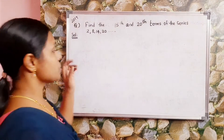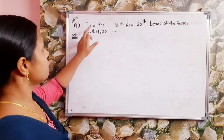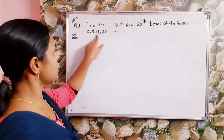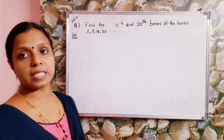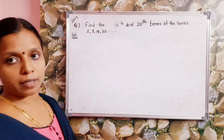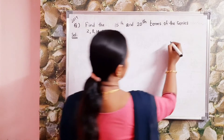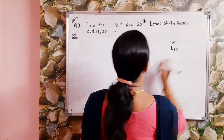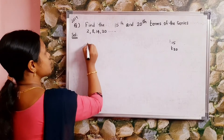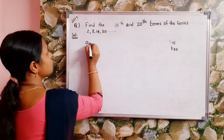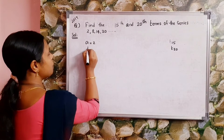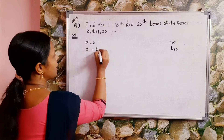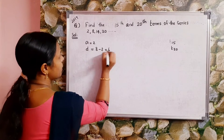Next problem 2019: find the 15th and 20th term of the series 2, 8, 14, 20, etc. This is an AP. Given: first term a equals 2, and common difference d equals second term minus first term, that is 8 minus 2, which gives 6.